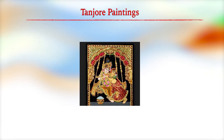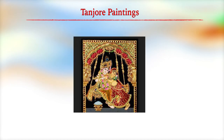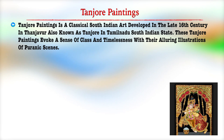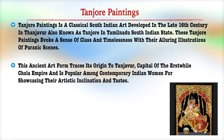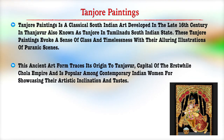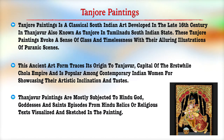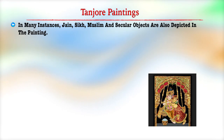Let us now discuss Tanjore painting, a classical art form of Southern India. Developed in the late 16th century in Tanjore, Tamil Nadu, the paintings evoke a sense of class and timelessness with their alluring illustrations of devotional scenes. This ancient form traces its origin to Tanjore, capital of the erstwhile Chola empire, and is popular among contemporary Indian women for showcasing their artistic inclination and taste. Tanjore paintings are mostly devoted to Hindu gods, goddesses, and saints from Hindu religious texts.